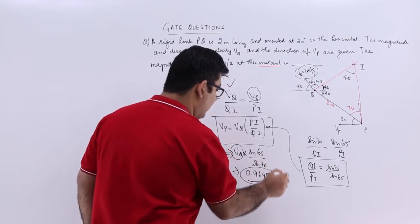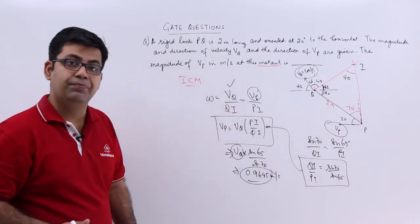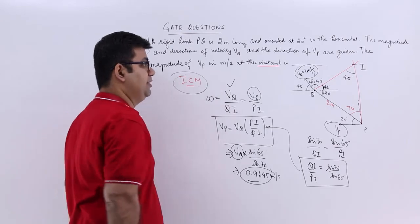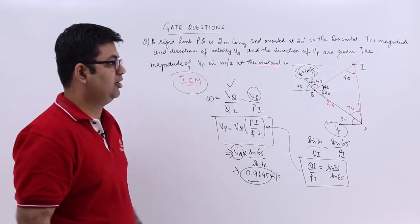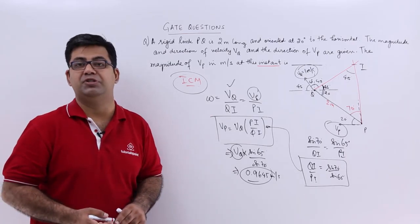This is the magnitude of the velocity at point P, and the direction is given to you. This is how you use the instantaneous center method to calculate the velocity of a point on a link. Now let's move on to question number 2.